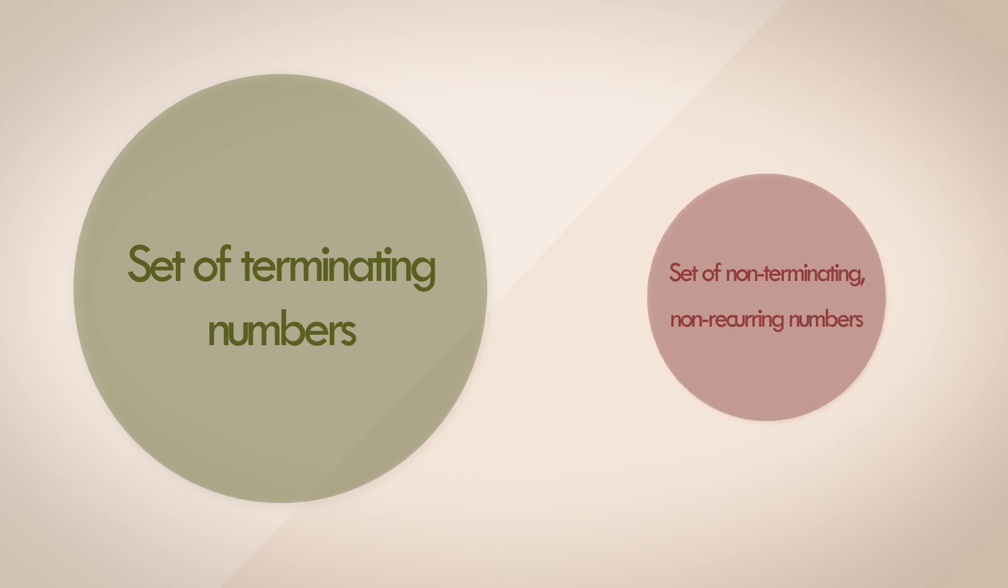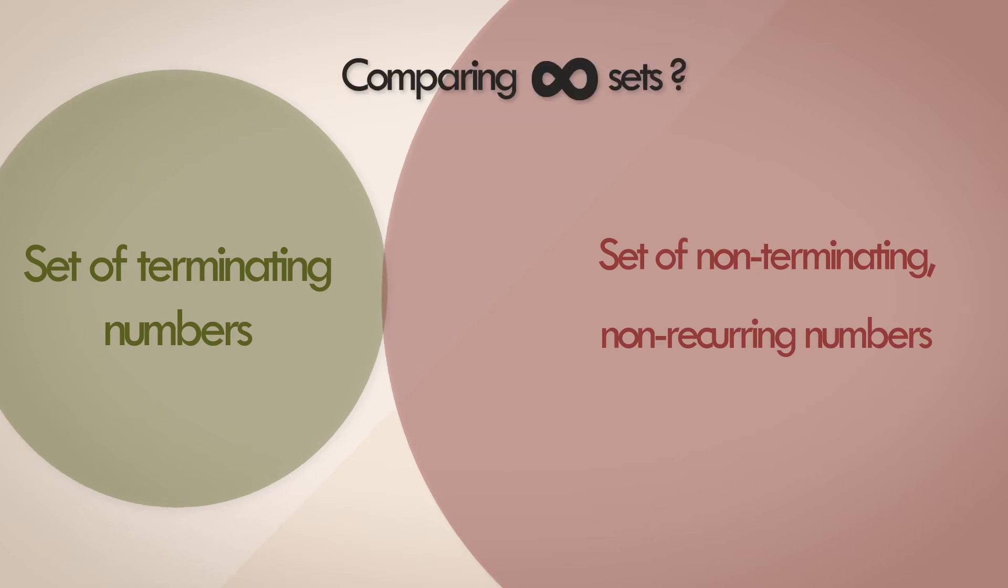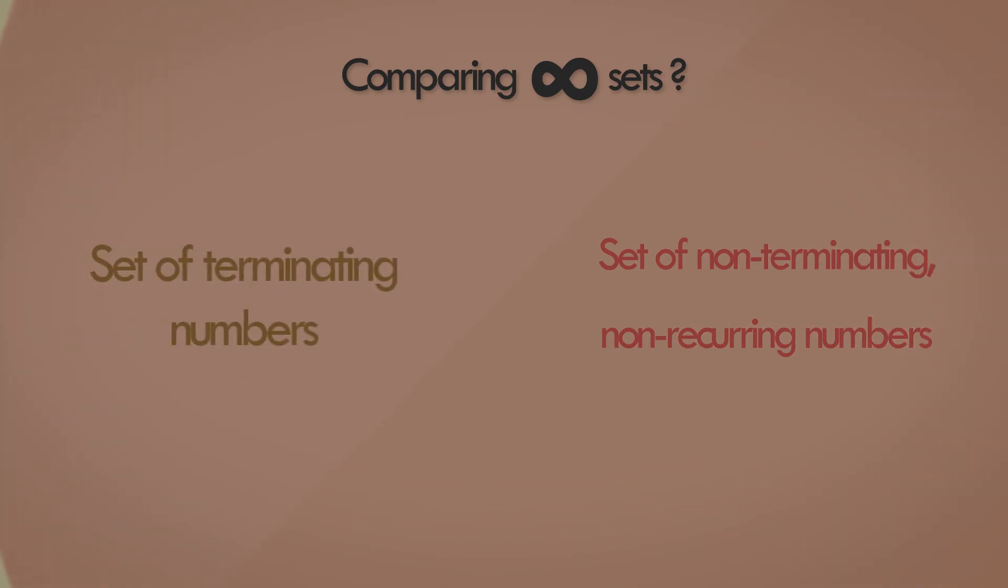You might think that these sort of non-terminating numbers are few and far between, but on the contrary, it can be mathematically proven that there are more irrational numbers than there are rational numbers. Far more. The old school of thought for this was, how do you compare two boundless sets? There are an infinite number of rational numbers, and there are an infinite number of irrational numbers. How do you say that one infinite set is bigger than the other?